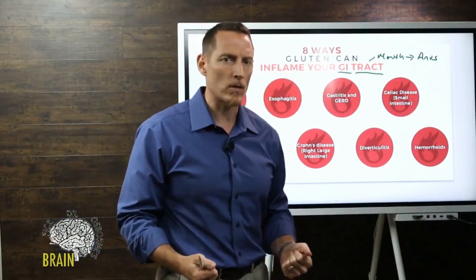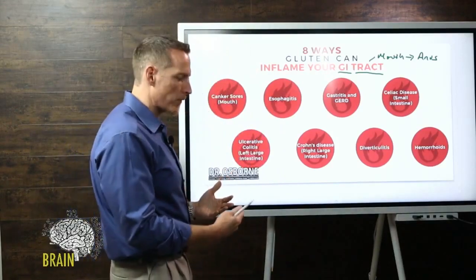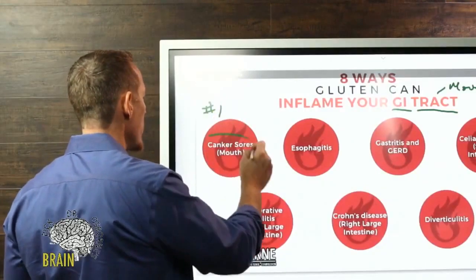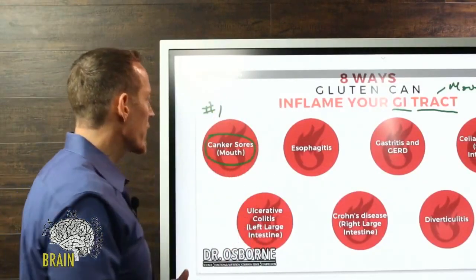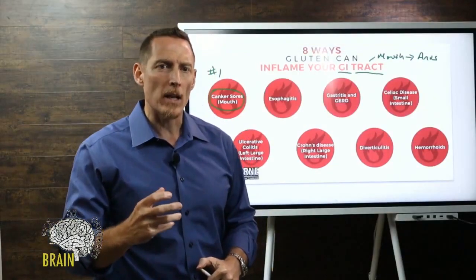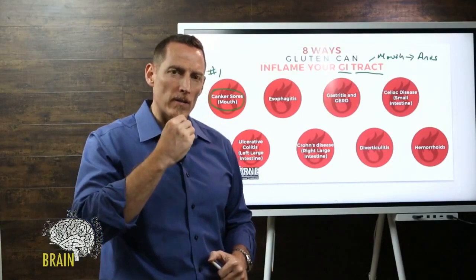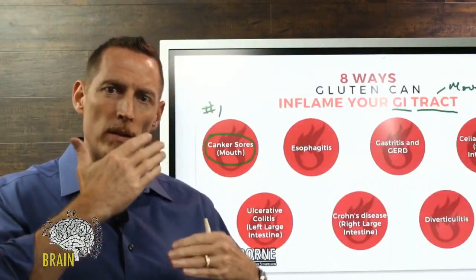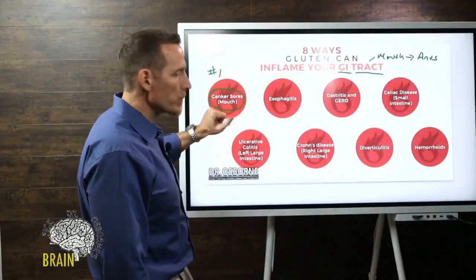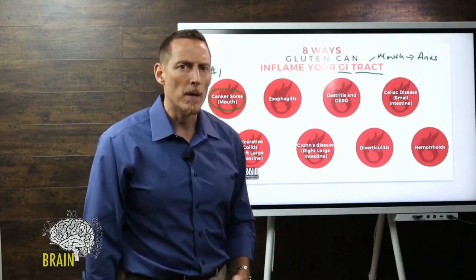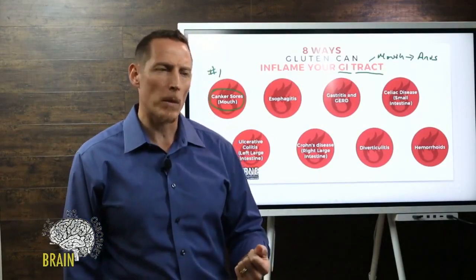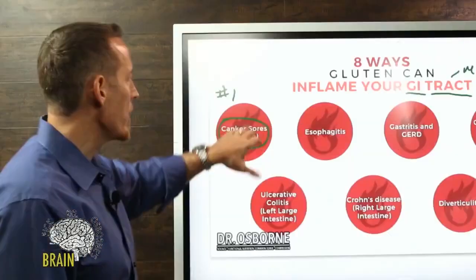Number one is canker sores — in the mouth, sometimes referred to as aphthous ulcers or aphthous stomatitis. If you've ever had a blister that kind of pops and crevices down in the mouth — sometimes on the lips, sometimes on the tongue — these start out as blisters and then become like an ulcer within the mouth itself.